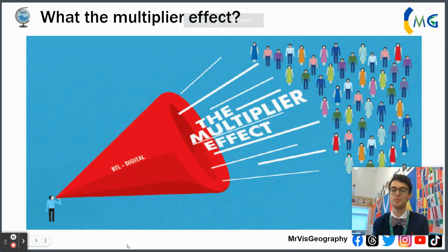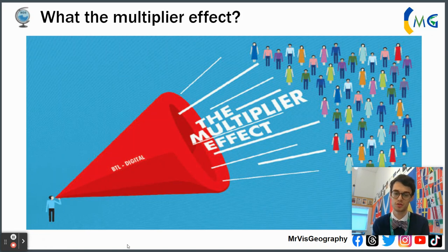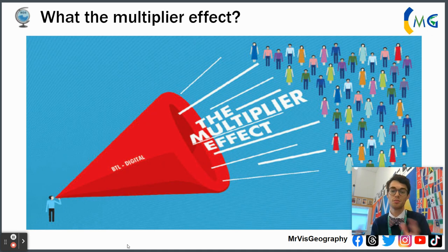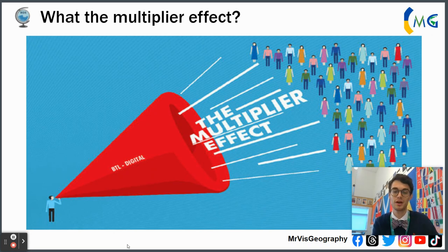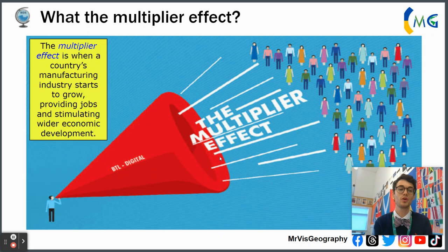Good afternoon Year 11. The multiplier effect is one of the key principles and concepts you need to know for AQA Geography B Paper 2. It's basically a geographical process that accentuates something that has happened in the economy. That something is often the secondary manufacturing sector, so the multiplier effect often applies when a country's manufacturing industry starts to grow, providing jobs and stimulating wider economic development.